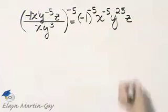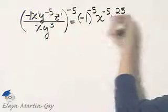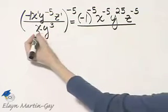And this z is raised to the power of, remember again, understood 1, 1 times negative 5, and that's negative 5. Then what do we have in the denominator?